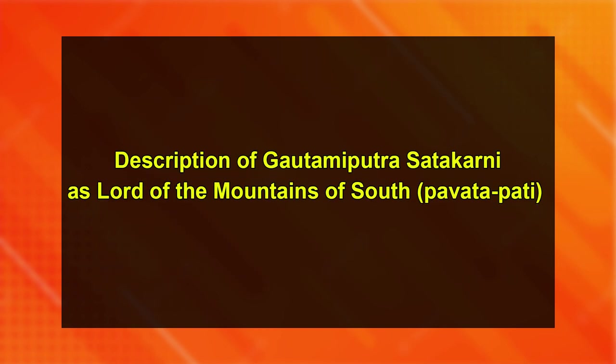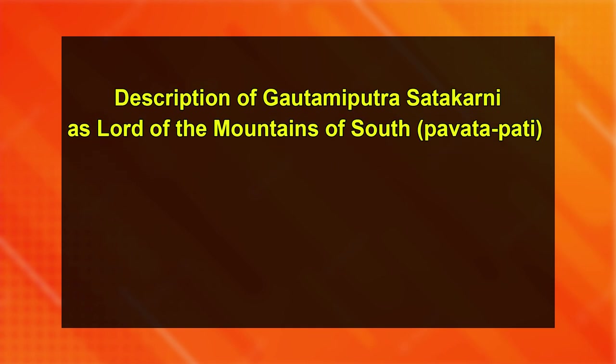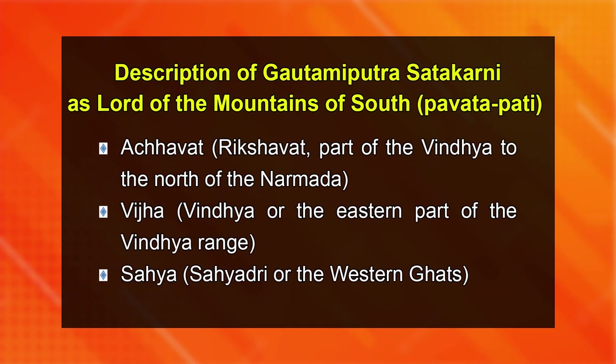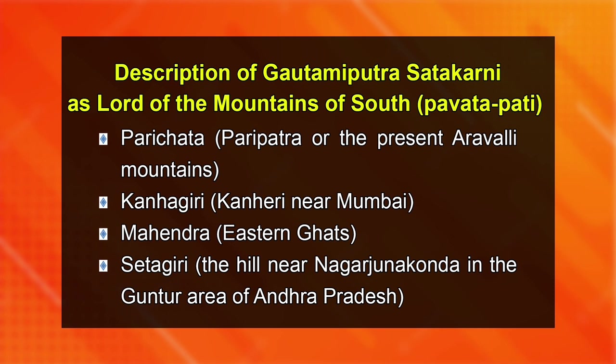He has also been described as lord of the following mountains of the south: Pavatapati; Laika Chavat; Rikshavat, part of the Vindhya to the north of Narmada; Vijha or Vindhya, the eastern part of Vindhya range; Sahya or Sahyadri, the western Ghats; Parichata or Paripatr, the present Aravalli mountains; Kanhagiri — Kanheri, near Mumbai; Mahindra, the eastern Ghats; and Sitagiri, the hill near Nagarjuna Konda in Guntur area of Andhra Pradesh. When he is praised as the king whose mounts drank the water of three oceans — Trisamudratoya Pitavahana — controlling the whole territory from eastern to western seaboards, he correctly received the title Lord of Dakkan, the Dakshinapathapati.